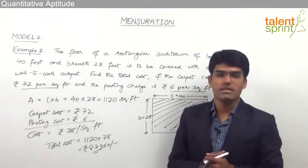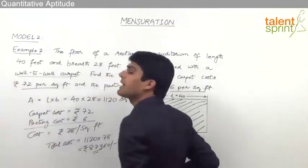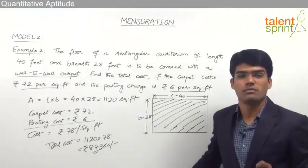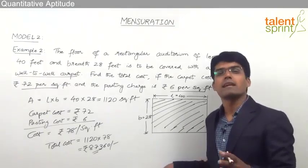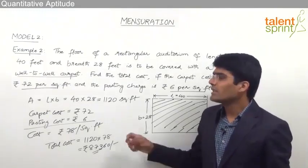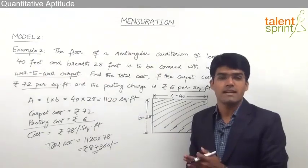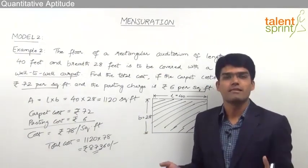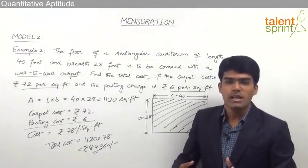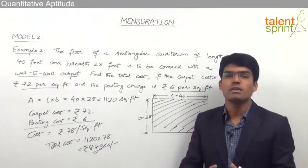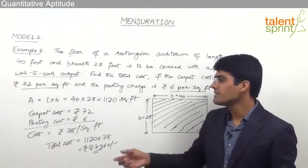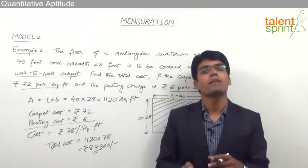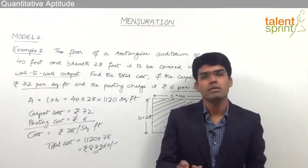An important point is that it need not always be a wall-to-wall carpet — it can be floor polishing, tiling, or any other activity done on the floor. In all such cases, we are working on the area, so we find the area first and then multiply by the cost per square feet. We must correctly decide whether we are working on the area or the perimeter, and then multiply by the cost per unit to get the required answer.